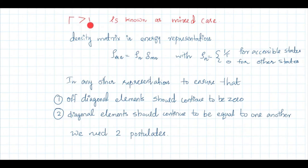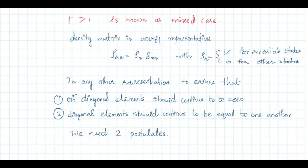If Γ > 1, it is the mixed case, where more than one state is possible for the system. The density matrix in energy representation is again diagonal: ρ_mn = ρ_n δ_mn, with ρ_n = 1/Γ for accessible states and 0 for others. If Γ = 2, the diagonal entries are 1/2 and 1/2; if Γ = 3, the diagonal entries are 1/3, 1/3, 1/3, with all other elements zero.